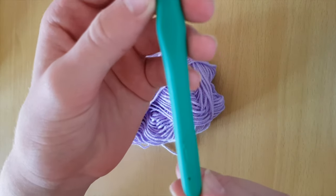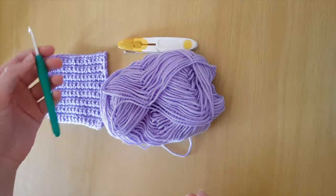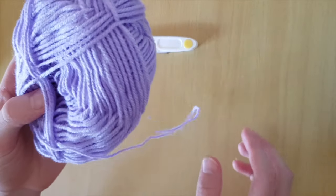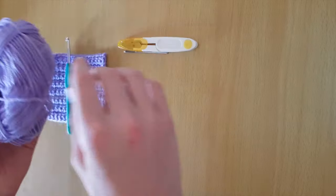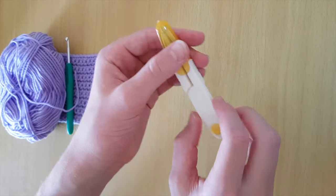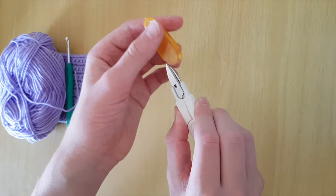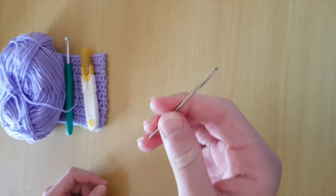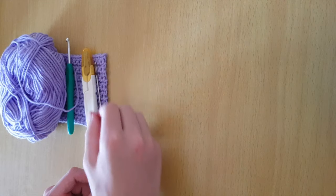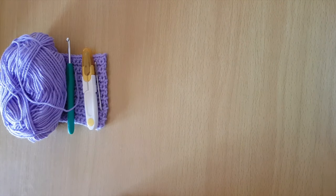Today I will be using a 4.5 millimeter crochet hook as well as some DK weight yarn, also known as double knit, eight ply, or a weight three. You'll also need some scissors or clippers and finally a sewing needle. This is to weave in any ends that you may have after you've finished.